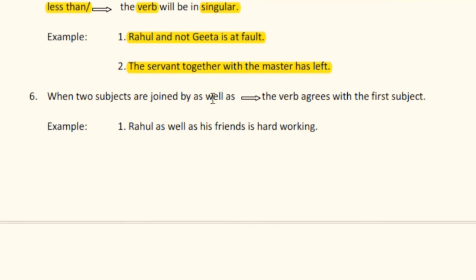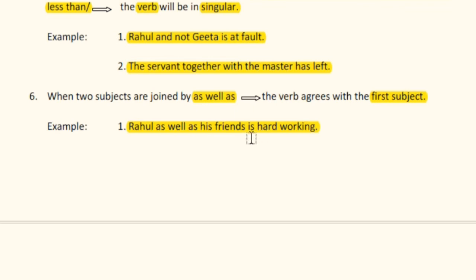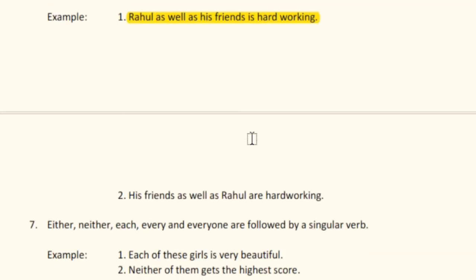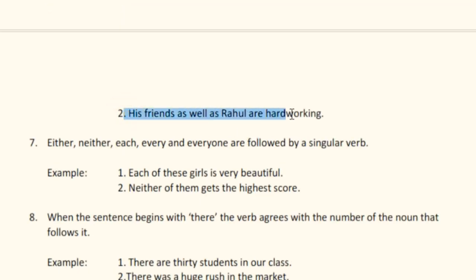Rule number six: when two subjects are joined by 'as well as', the verb agrees with the first subject. For example, 'Rahul as well as his friends is hardworking' — here the first subject is 'Rahul' (singular), so the singular verb 'is' is used. Conversely, 'His friends as well as Rahul are hardworking' — the first subject is 'his friends' (plural), so the plural verb 'are' is used.